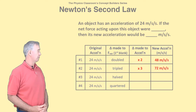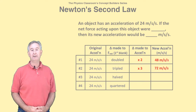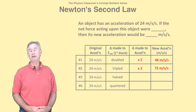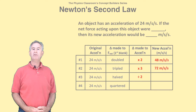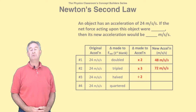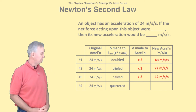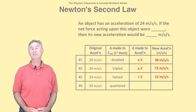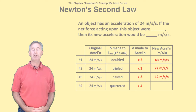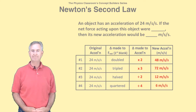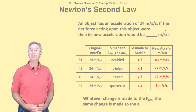In rows number three and four, the net force is decreased, so the acceleration is also decreased. We need a dividing factor to make the 24 meters per second per second smaller. In row three, the net force is halved — that means divided by two — so the acceleration must be divided by two. The new acceleration is 24 meters per second per second divided by two, that's 12 meters per second per second. In row number four, the F net is quartered, that is divided by four. So the new acceleration is 24 meters per second per second divided by four, that's 6 meters per second per second. Notice in each row of the table, whatever change is made in F net, the same change is made to the acceleration.